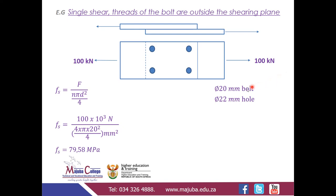The connection is subject to 100 kN. The bolt diameter is 20 mm and the hole size is 22 mm — the hole is always 2 mm larger than the bolt. Substituting into the formula: F = 100 × 10³ N, n = 4 bolts, d = 20 mm. This gives: shear stress = 100×10³ / (4 × π × 20² / 4) = 79.58 MPa.